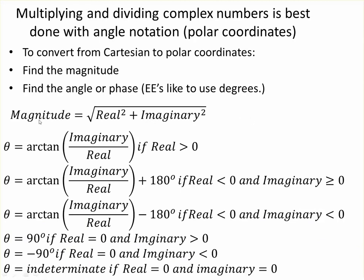Just a quick review, the magnitude is the real squared plus the imaginary squared. Then all you need to do is find the angle by taking the arc tangent of the imaginary over the real. However, a calculator won't necessarily give you the right answer.